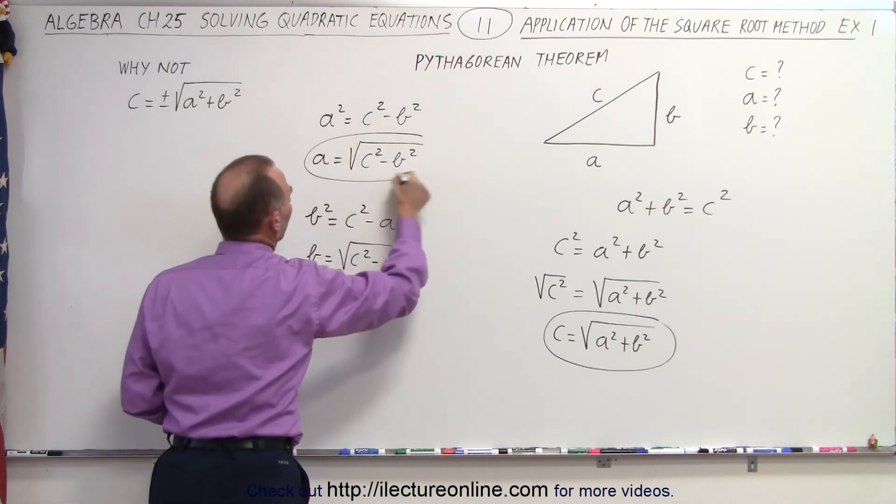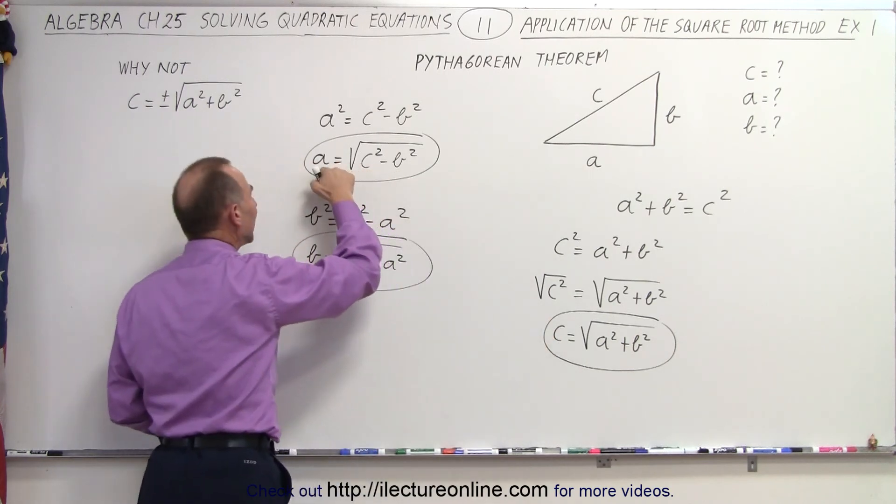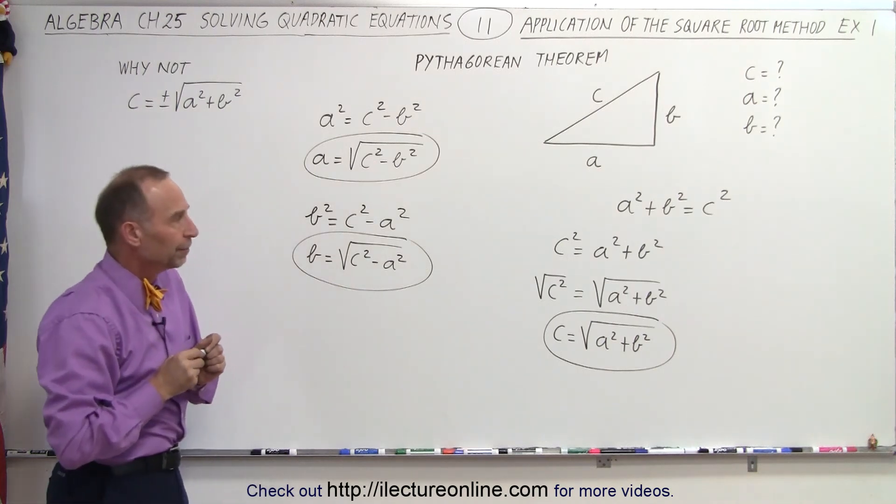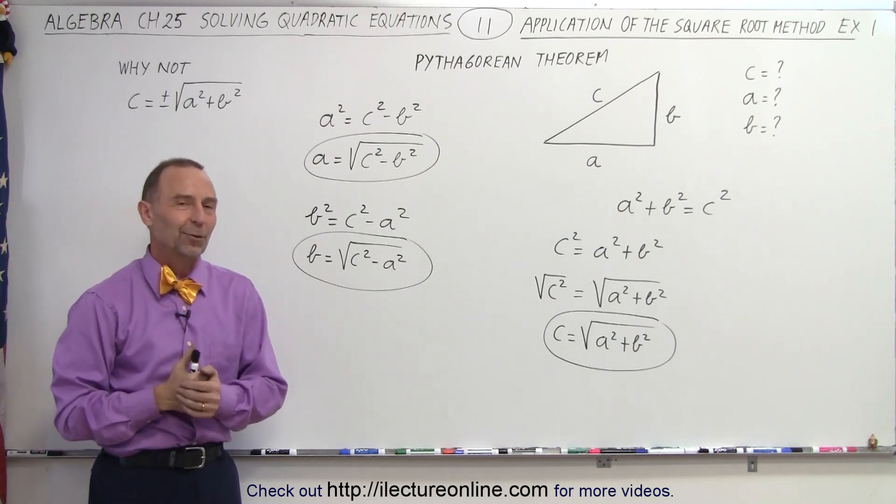So there are the three solutions when we solve for c, the hypotenuse, or a or b, one of the two sides of the right angle triangle. And that is how it's done using the square root method of solving quadratic equations.